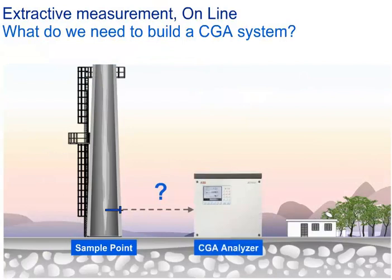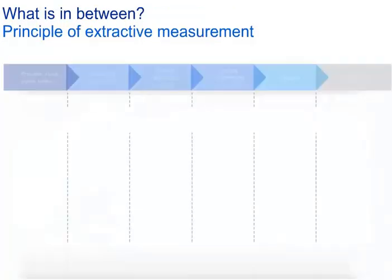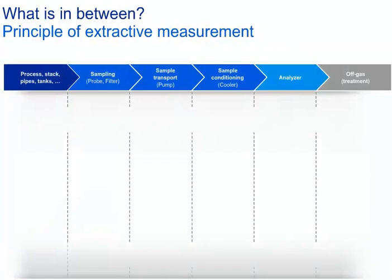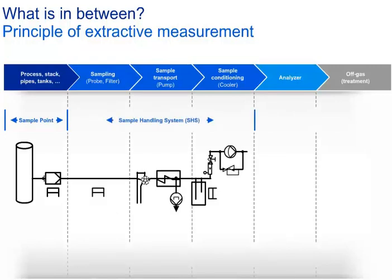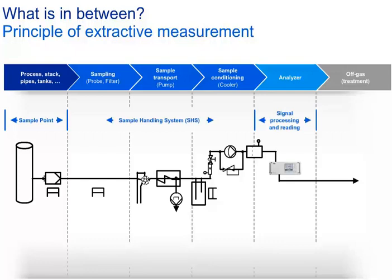In the next section we will focus on the extractive measurement and the system components typical for the design of a complete continuous gas analysis system. After drawing the gas from a stack or a process pipe, the sample gas will be filtered from dust load and transported in a sample line — often heated to prevent condensation from wet gases. The gas enters the sample handling system, which prepares the sample gas for accurate and reliable measurement without damaging the gas analyzer. Finally, the conditioned gas will be measured inside the analyzer and released into the atmosphere or back into the process.